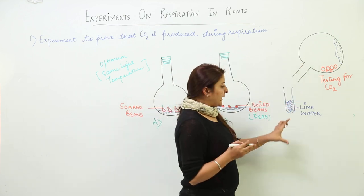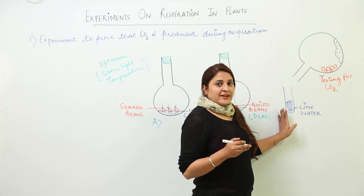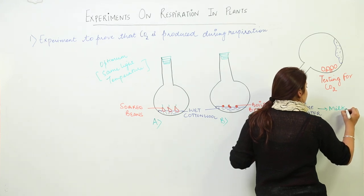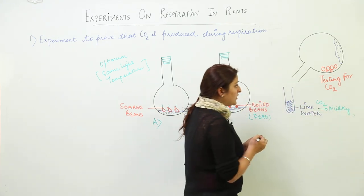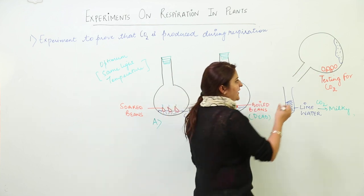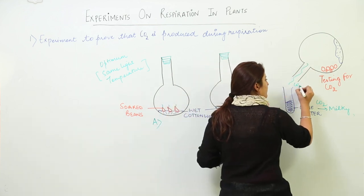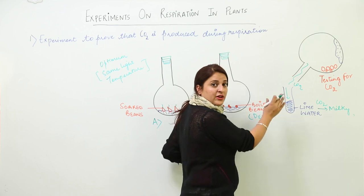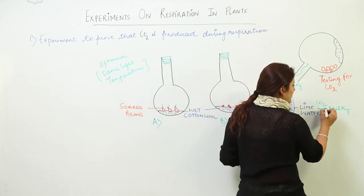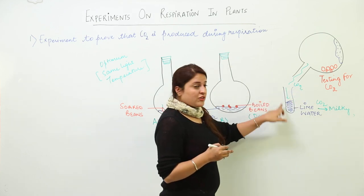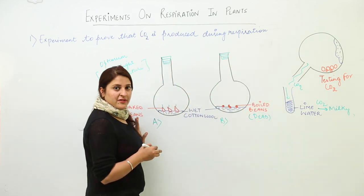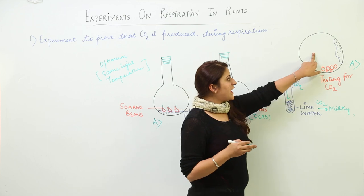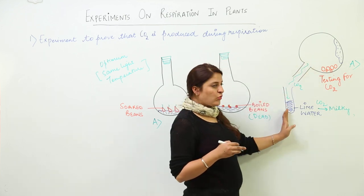We are going to tilt each flask into lime water. Carbon dioxide has the property of turning lime water milky. Since carbon dioxide is a heavy gas, it moves into the lime water, settles down, and converts it to a milky appearance. The flask containing germinating seeds — flask A — turns the lime water milky, confirming that it contains carbon dioxide.